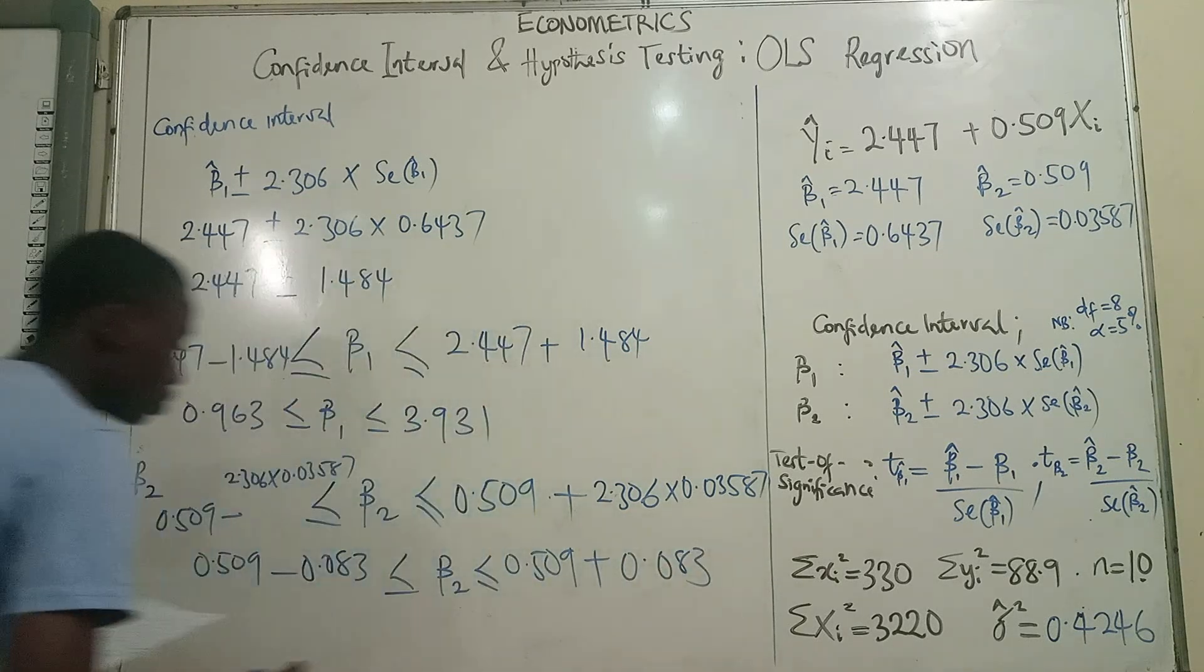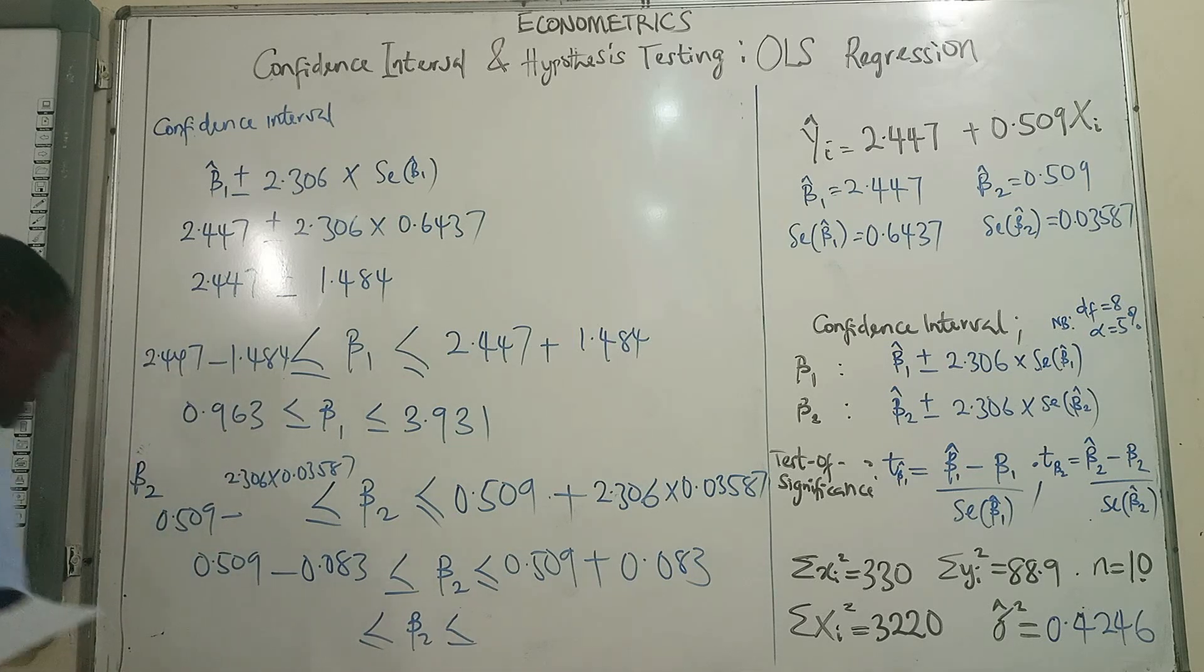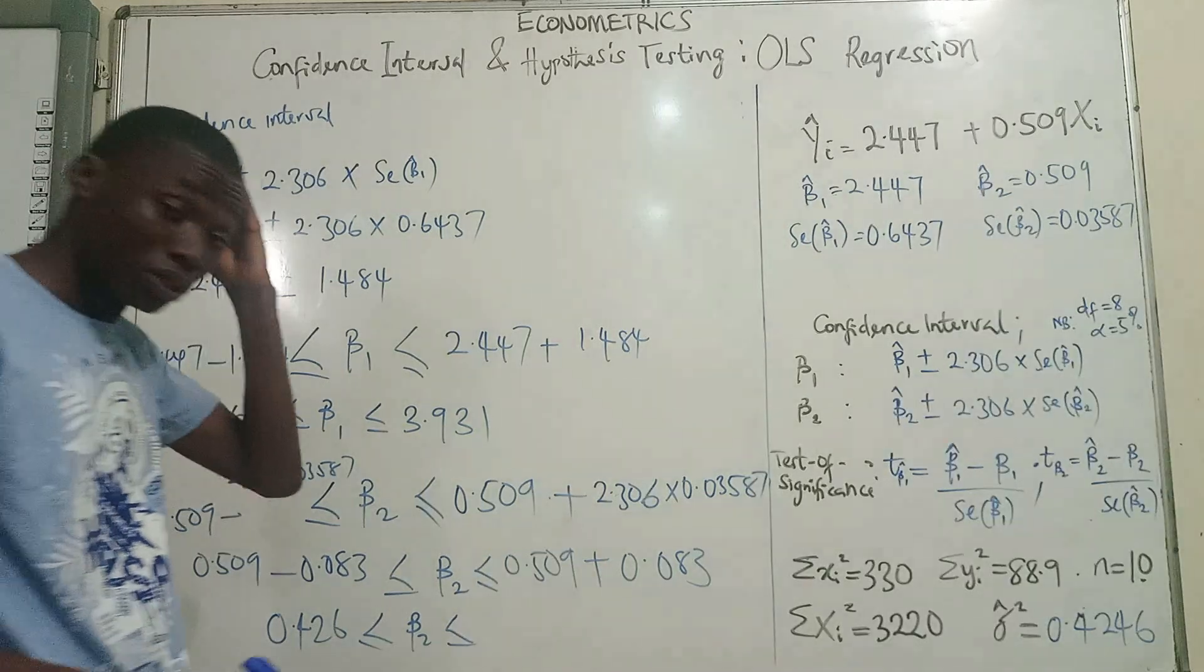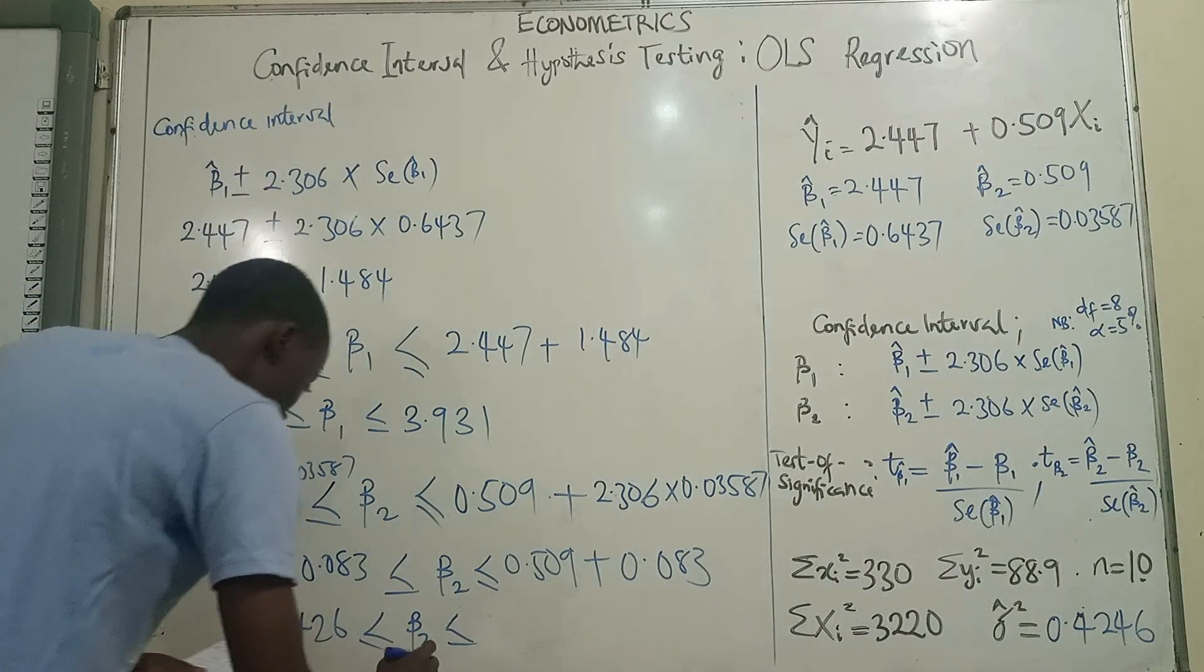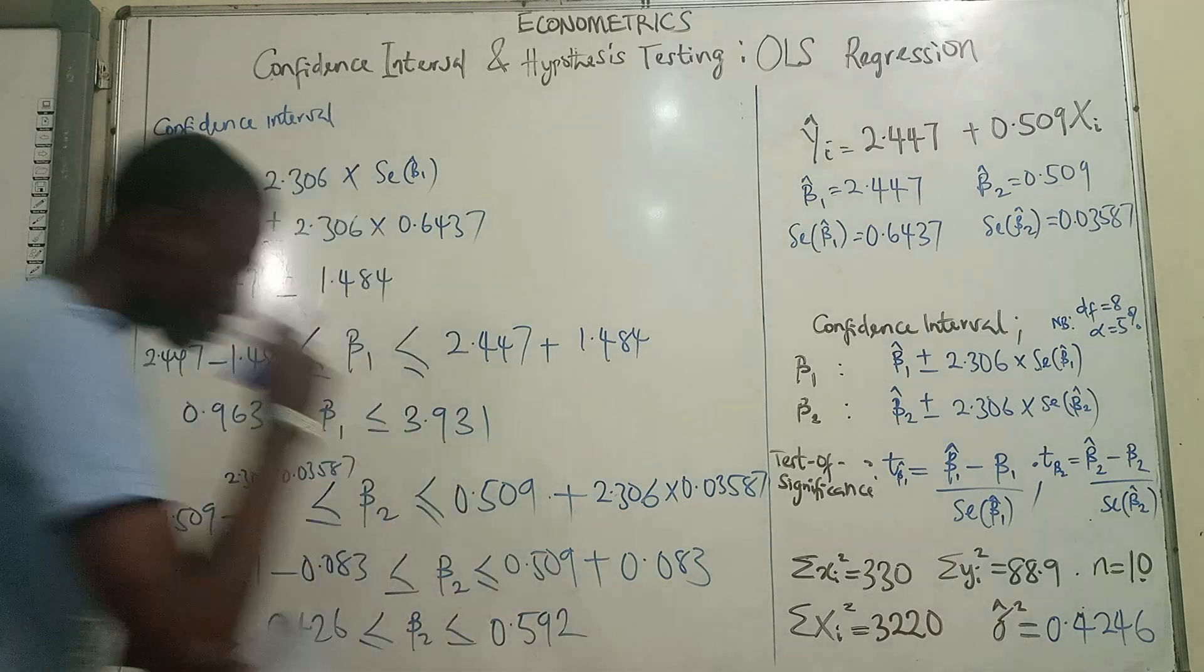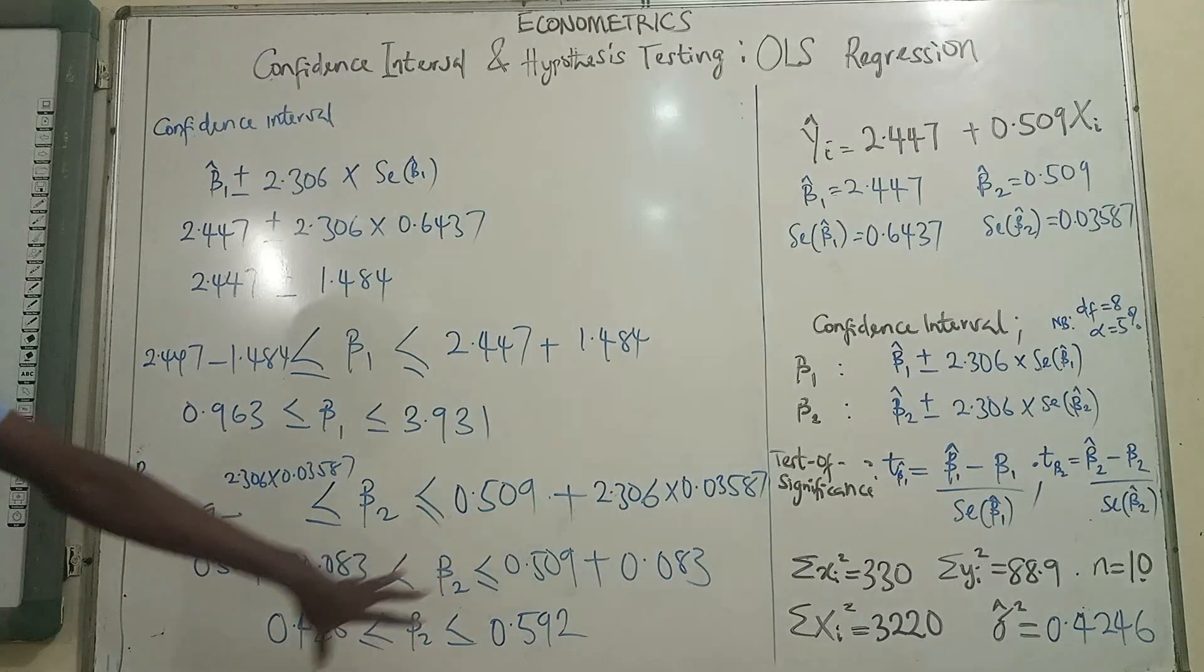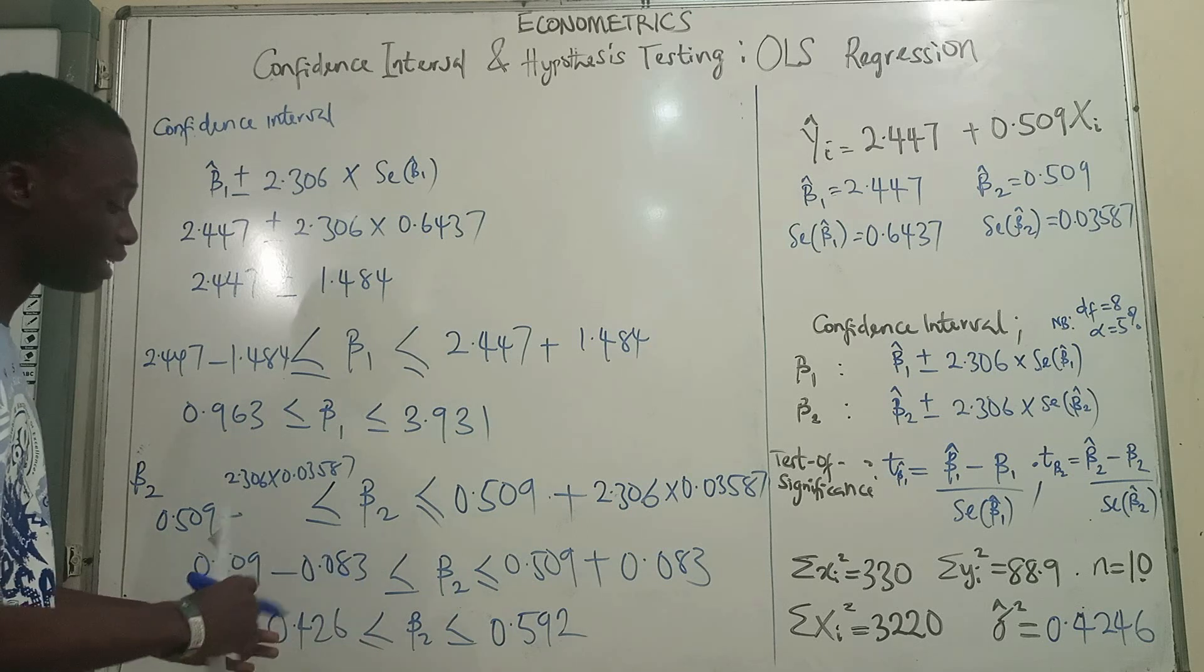So we expect beta 2, the population parameter, B will be 0.426 as the lower bound from 95% confidence interval and 0.592. So the marginal propensity to consume will be between these. So you see this follows the definition of confidence interval. We are trying to build some sort of bounds around the point estimates.